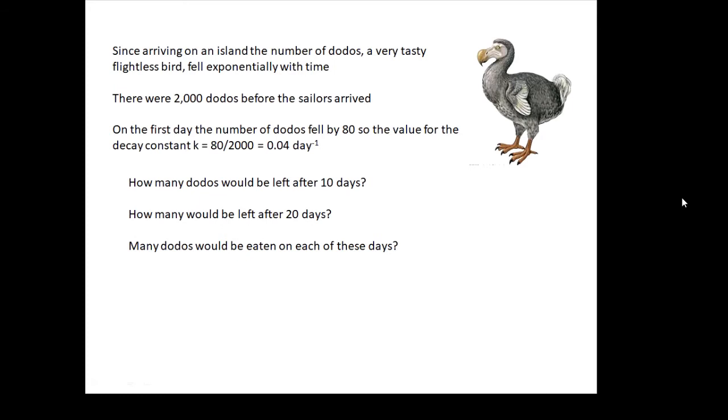So our decay constant is 80 over 2,000, which is 0.04 days to the minus one. That's our decay constant, 0.04. How many dodos will be left after 10 days? How many would be left after 20 days? And on each of those days, how many dodos will be eaten? You can pause the video and have a go at it yourself. I'll show you the answer.